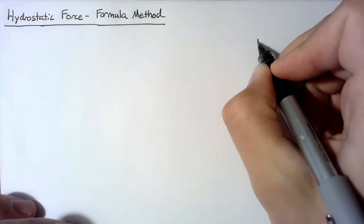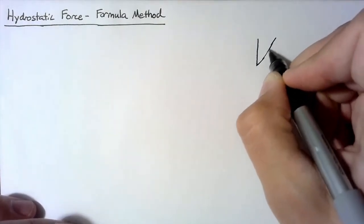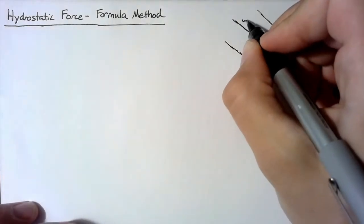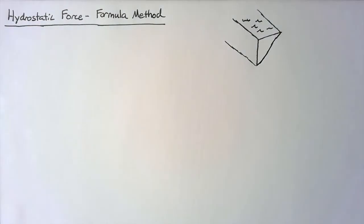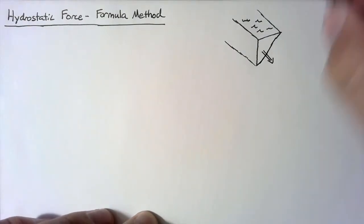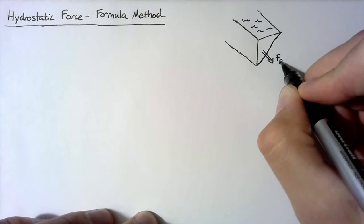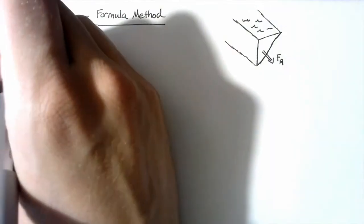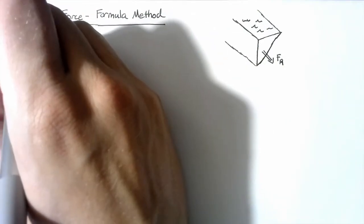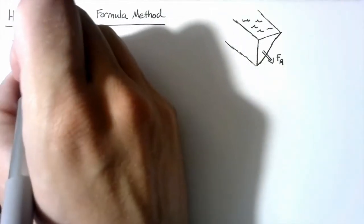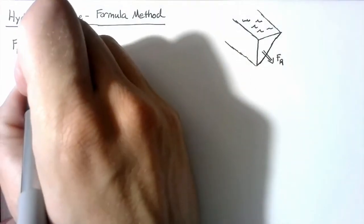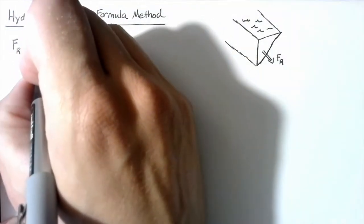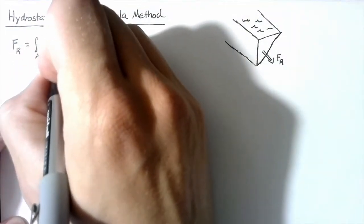What do I mean by a complex surface? Let's say that we're looking at the end of a trough in 3D, and there's water filling this trough up to the brim. Our question is: what is the resultant force due to the hydrostatic pressure? We said when talking about integration that the force on this surface is going to be the integral over the entire surface of the pressure. The pressure variation is equal to gamma multiplied by y.